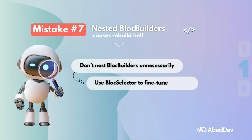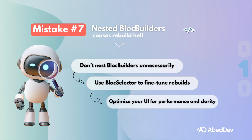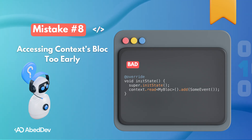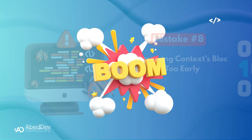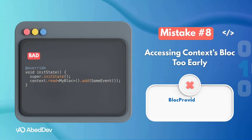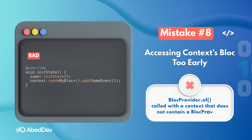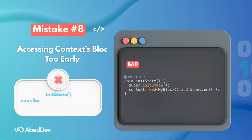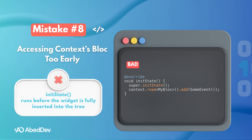Mistake number eight sneaks in early — literally. When you access a bloc from context too soon, such as in initState, you hit a runtime error: 'BlocProvider.of() called with a context that does not contain a bloc provider.' This happens because initState runs before the widget is fully inserted into the tree, so context doesn't yet have access to ancestors like your BlocProvider.